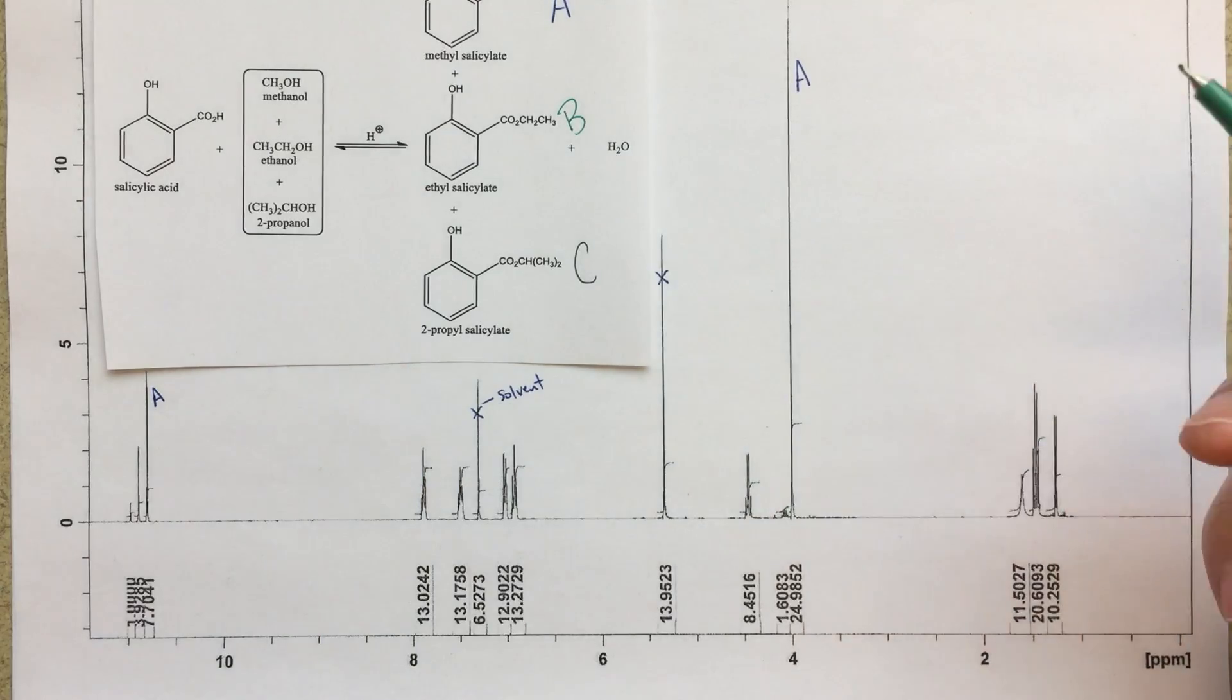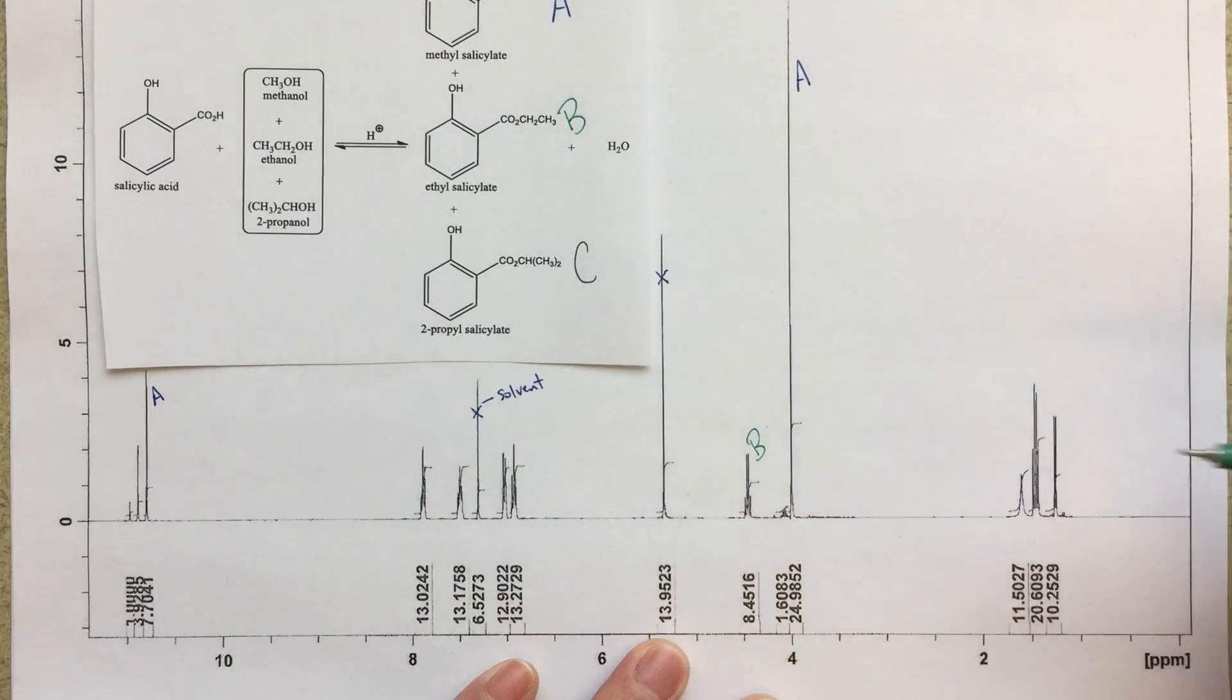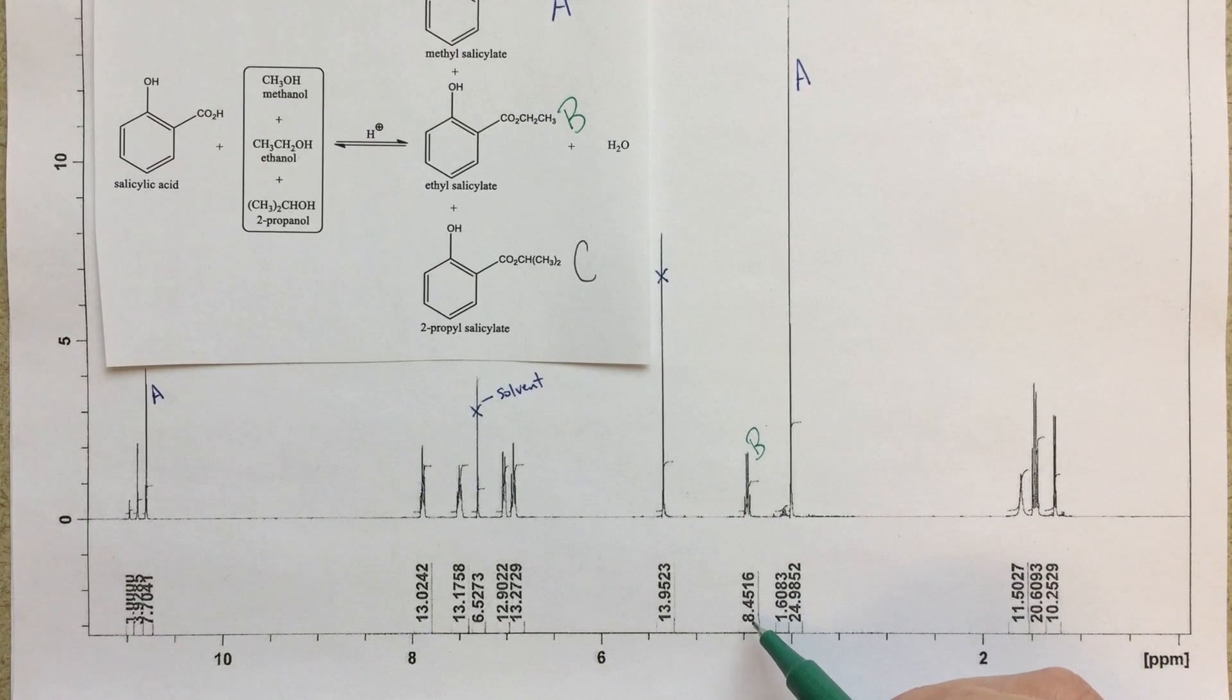So you sort of see that common motif, you've got a quartet over here, and then you've got a triplet over here, and it would integrate to two to three. So very clearly, I see a quartet here. That we can assign to B, and I've got this integration of 8.4516. Now I've got three choices over here, and this peak here, the one most upfield, to me this looks like a doublet. So it does not look like a triplet, it looks more like a doublet. So it's probably not that peak.